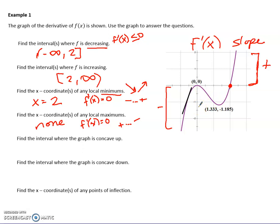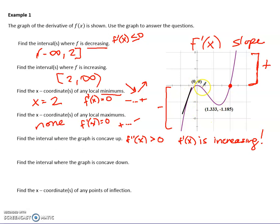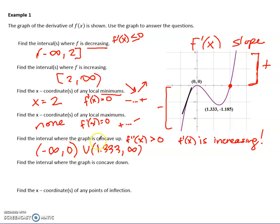If this is the derivative, find the interval where the graph is concave up. Concave up is when the second derivative is positive. The second derivative being positive means the first derivative is increasing. So I'm looking at this graph as if I'm taking its derivative — meaning I look at its slope. It's increasing until 0, so concave up from negative infinity to 0, and then it starts increasing again around x = 1.333, then increases forever. For concavity, always use parentheses, never brackets.